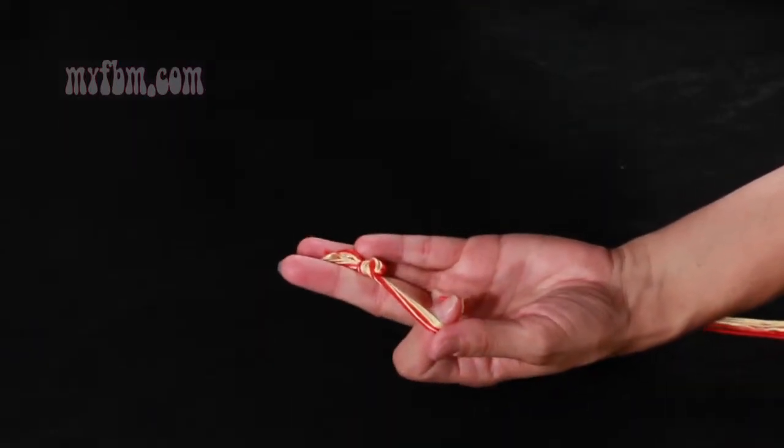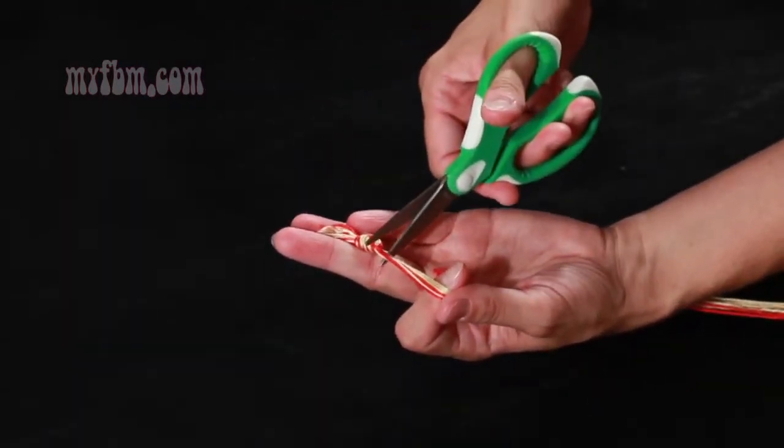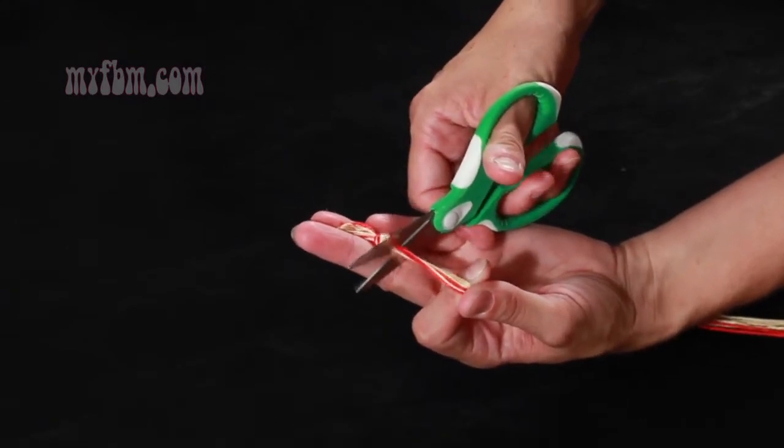What you're going to want to do is take a small pair of scissors and snip the excess string as close to the knot as you can.